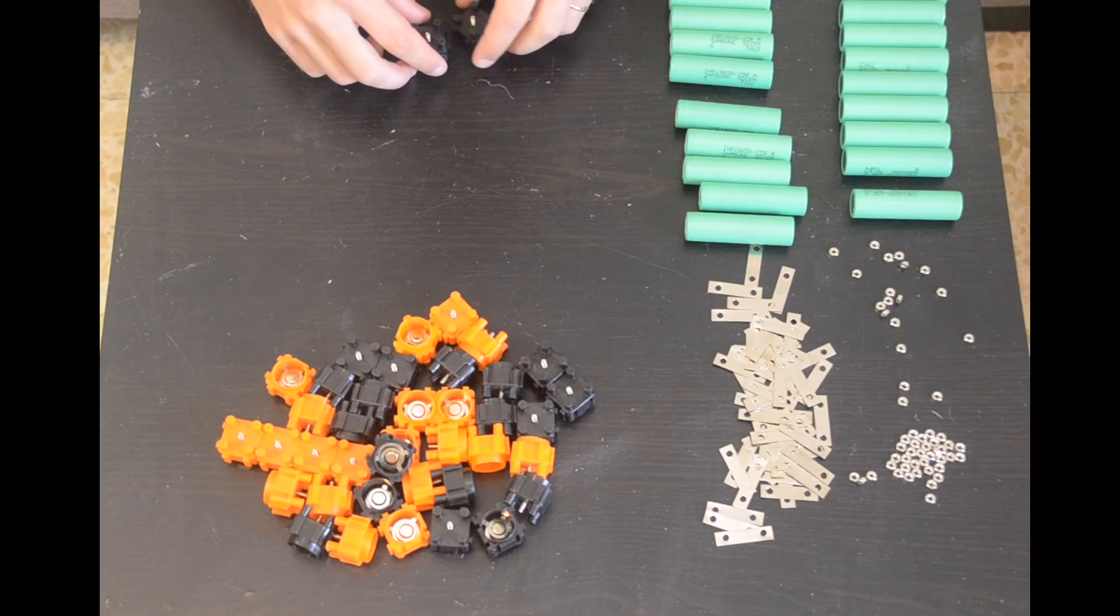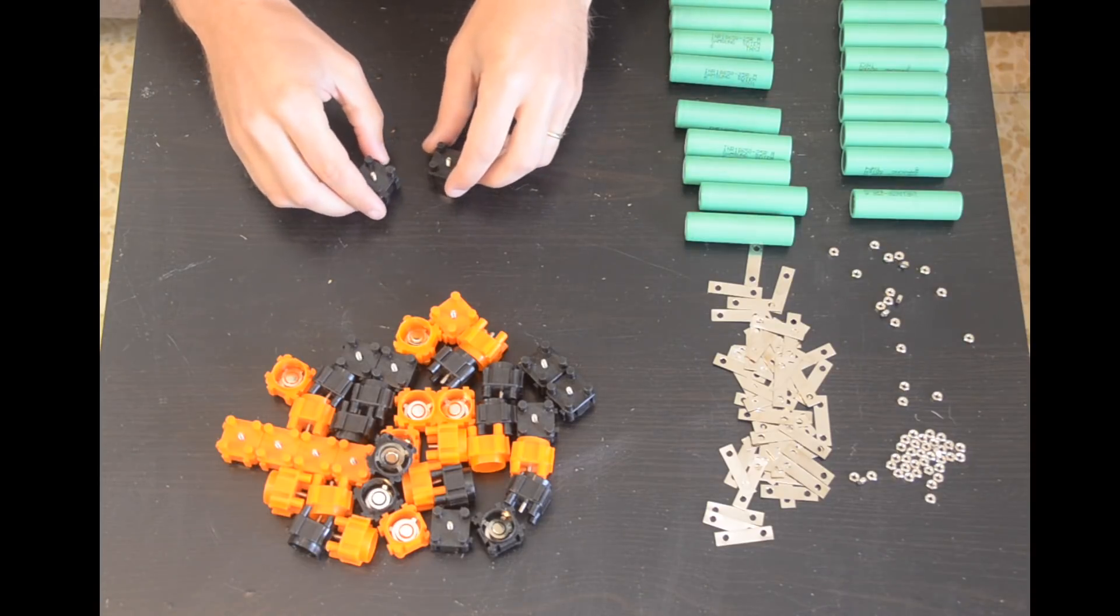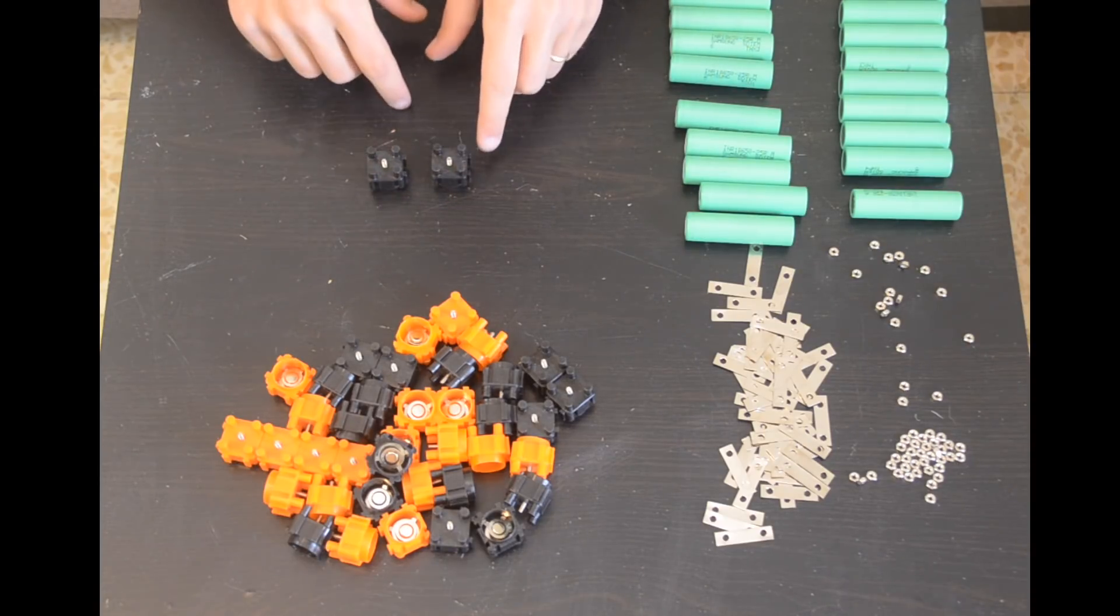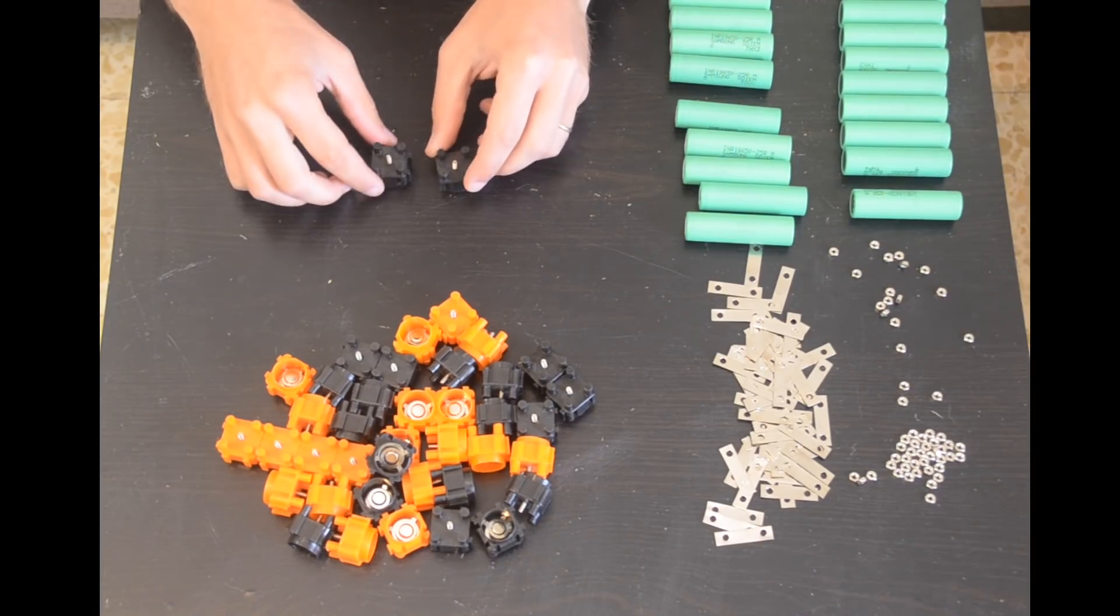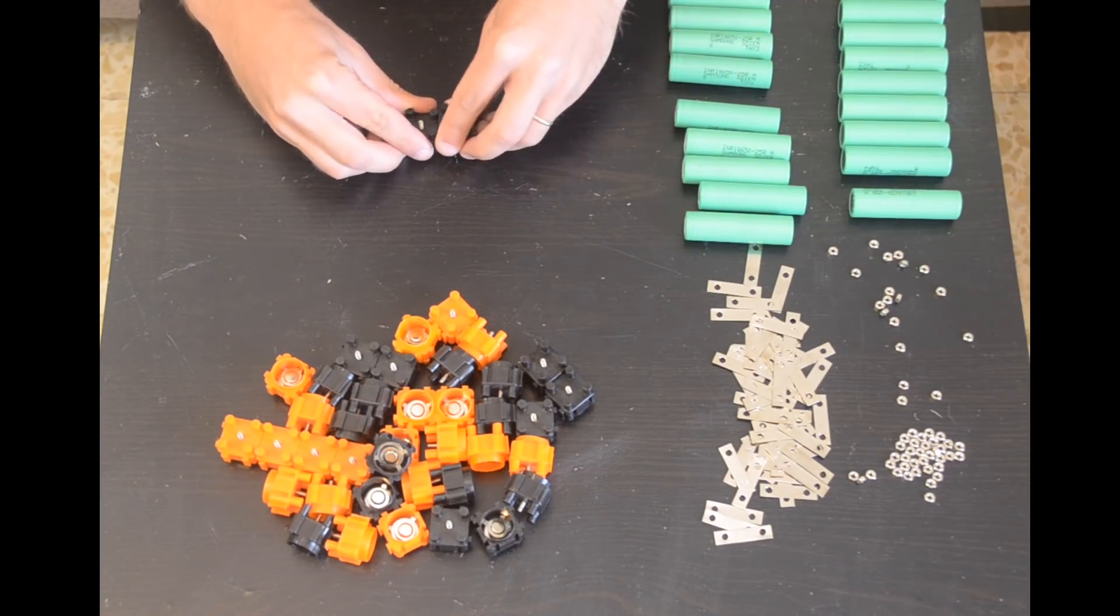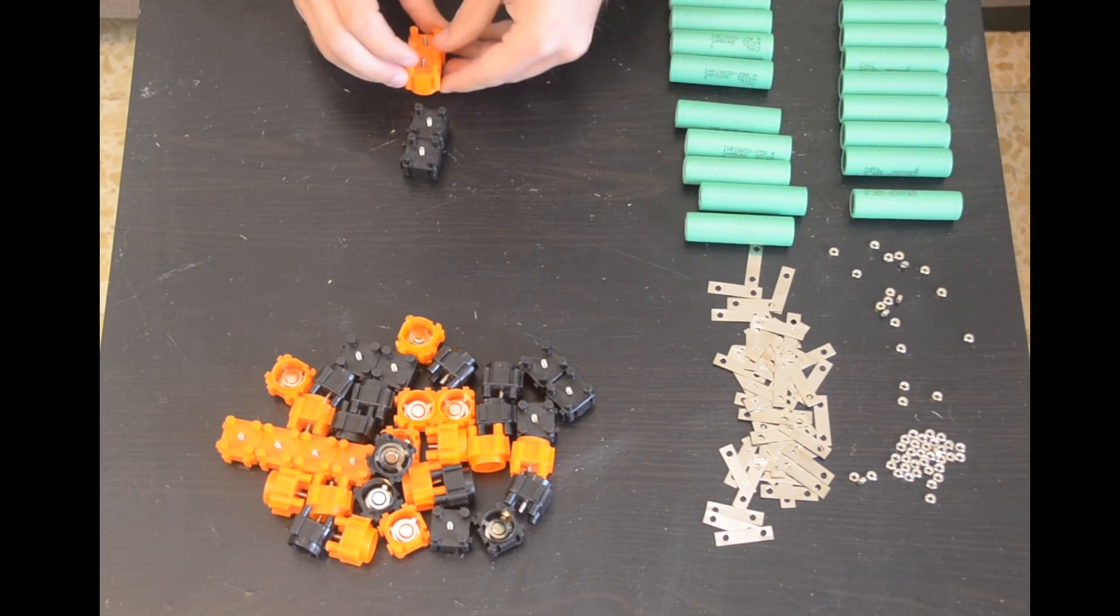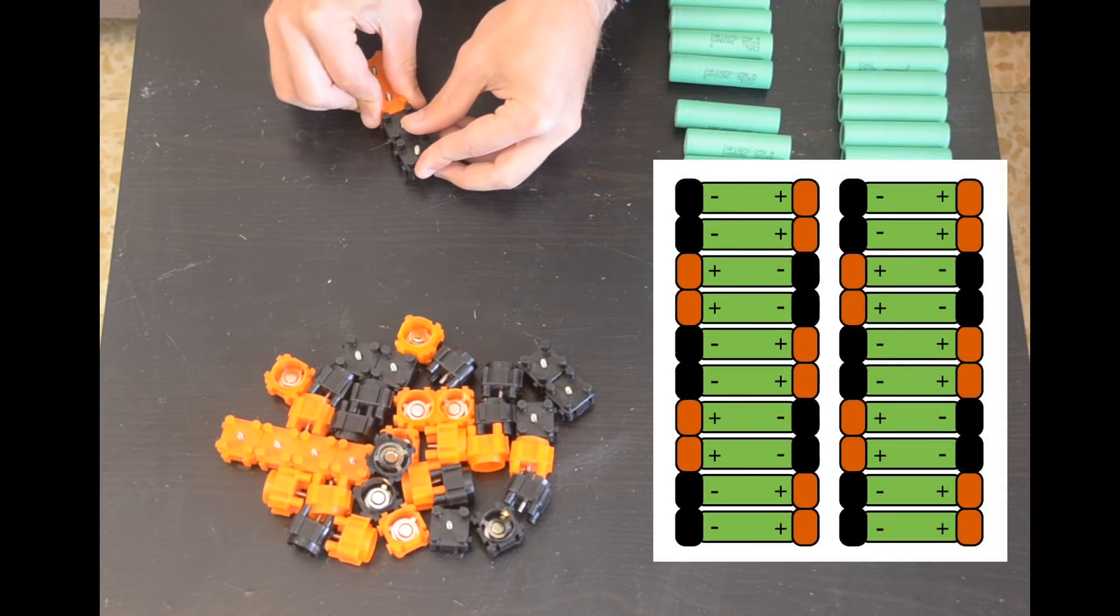All right now let's get to the actual assembly. I'll start by aligning my caps in the same orientation before I slide them together making sure the tails are up and to the right on both of the caps and that the sockets are down and to the left on both of the caps. Then I'll slide them together in pairs of two. Next I'll connect those pairs together to make all four rows that I'll need for my battery layout.